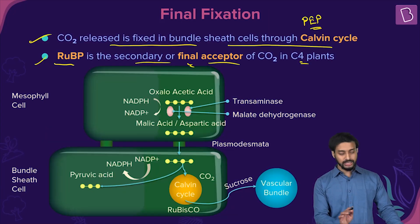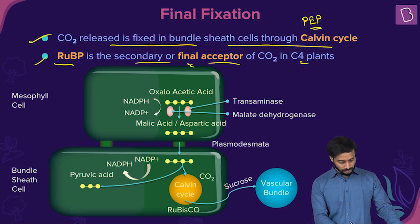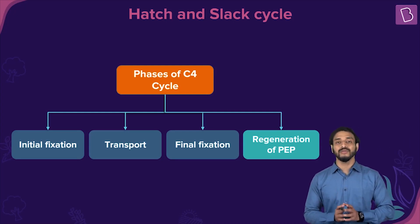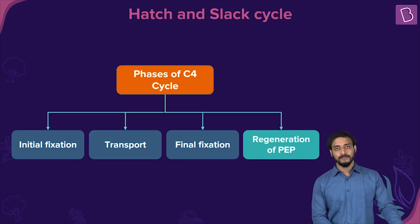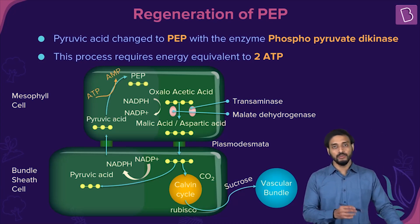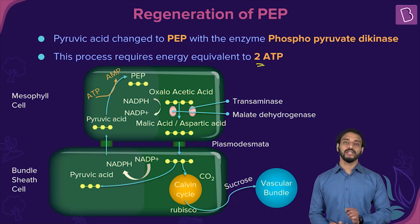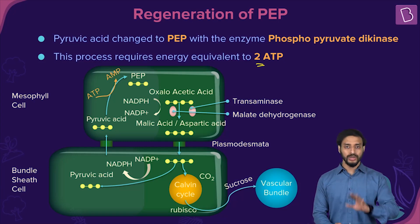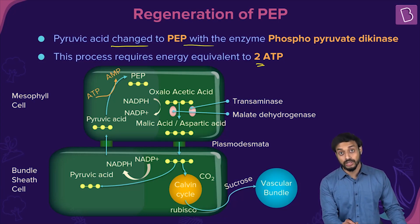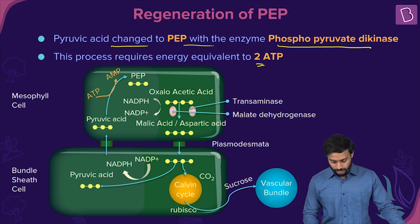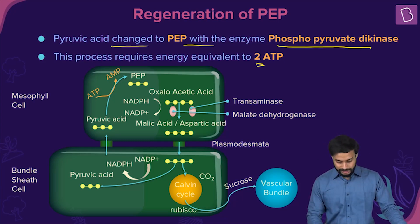The fourth step is regeneration of PEP. Pyruvic acid returns to the mesophyll cells and is converted back to PEP by the enzyme phosphopyruvate dikinase. This process uses energy equivalent to two ATP molecules — one ATP is broken down to AMP, which is equivalent to two ATP.